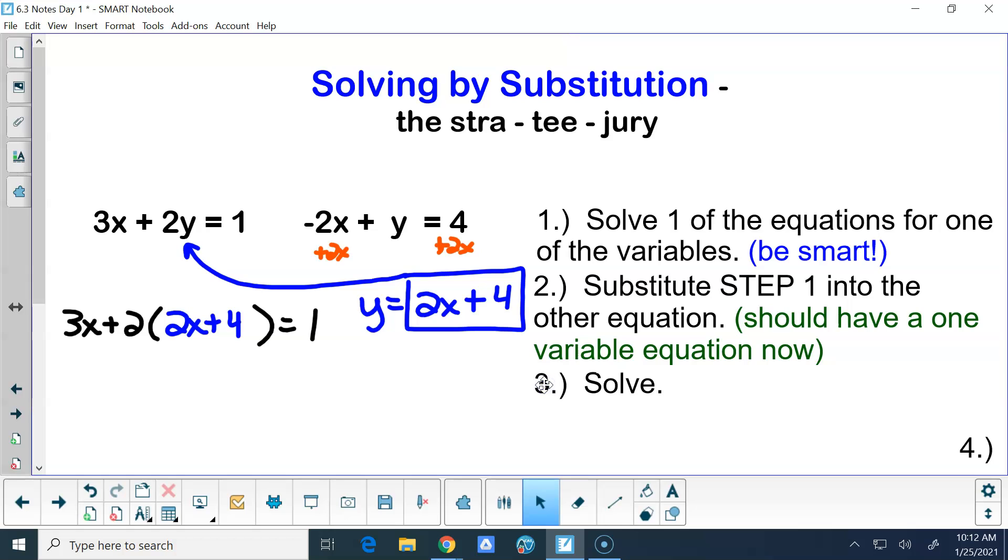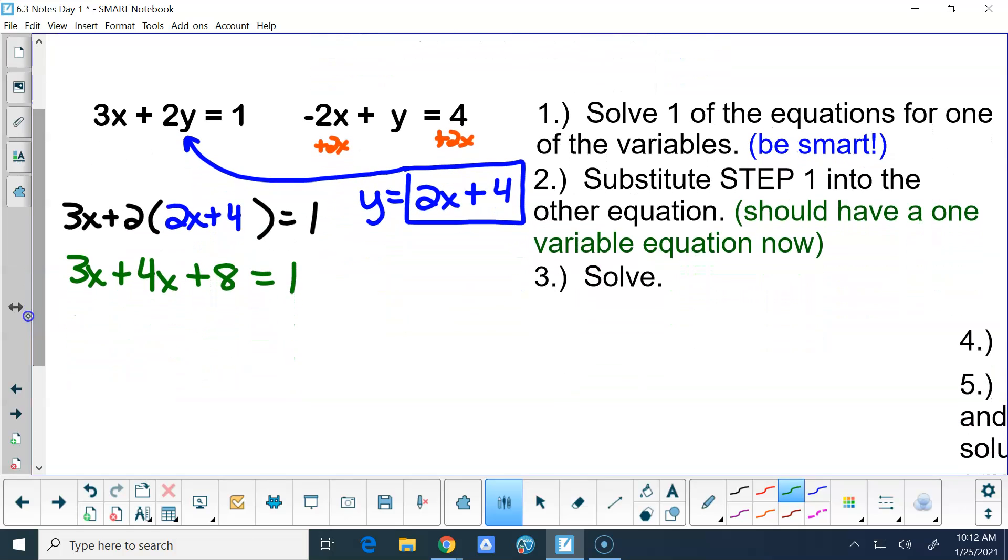Then we're going to solve that equation. So we'll probably have to do a little distribution, which is fine. We can handle that. So then this would be 3x plus 4x plus 8 equals 1. If I distribute the 2 in there, that's going to give me 7x plus 8 equals 1. Then I'm going to subtract 8 from both sides. That's going to give me 7x equals negative 7.